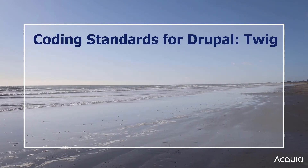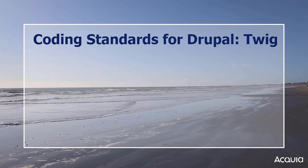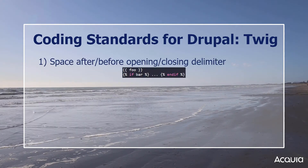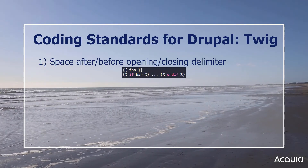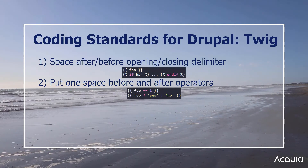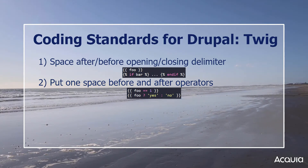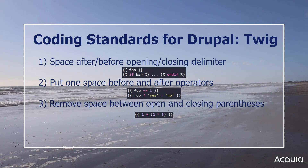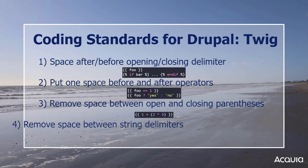Let's study some notable formatting standards when using Twig in the files that end in .html.twig. Use a space after an opening delimiter and before a closing delimiter. Put one space before and after operators. Be sure to put one space before and after the use of colon. And in arrays or hashes, make sure a space comes after the comma. Do not put a space between open and closing parentheses in expressions. And do not put a space between string delimiters.